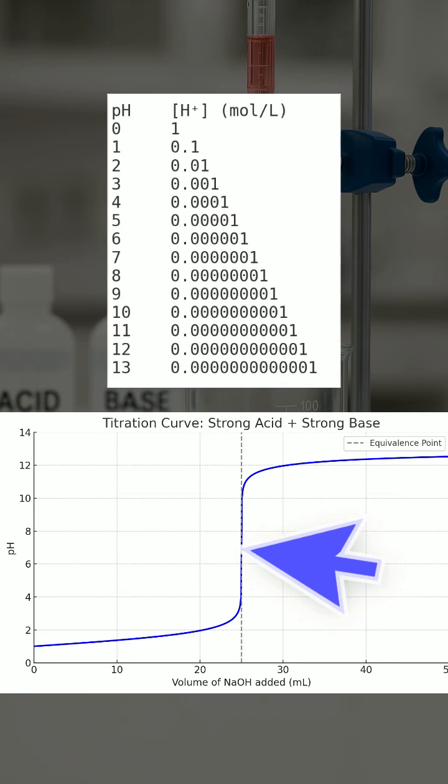So when we get close to neutralization, the H+ concentration is very small, and even a tiny addition of OH- will drastically reduce it, causing the pH to jump quickly.